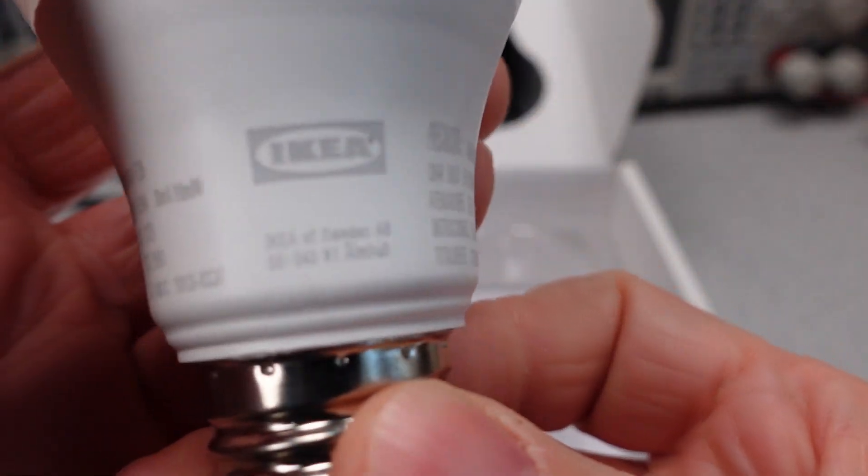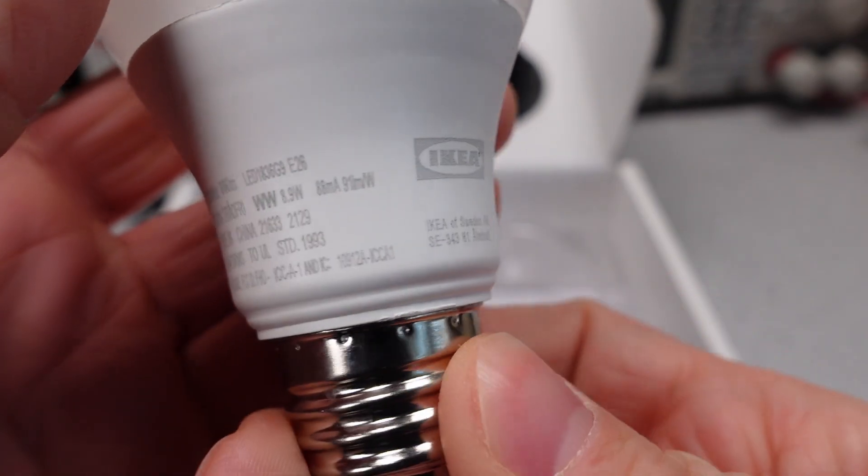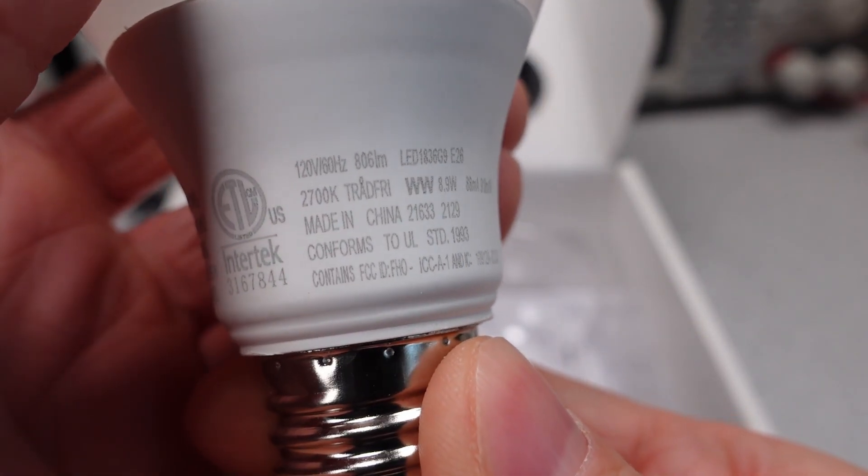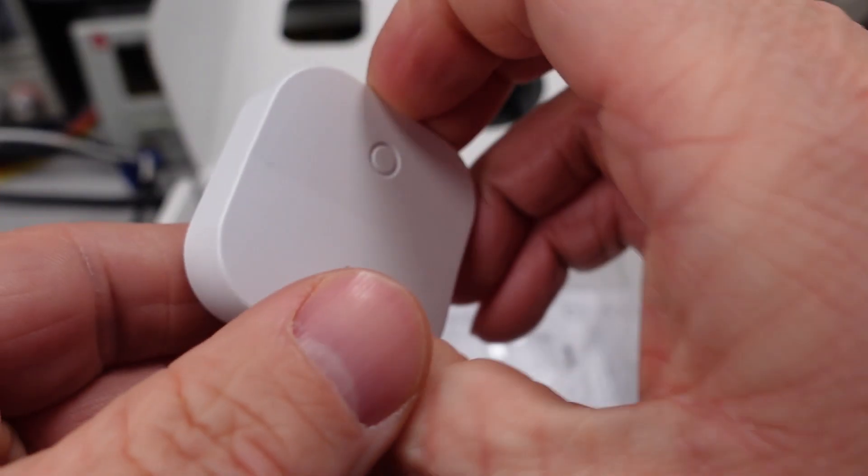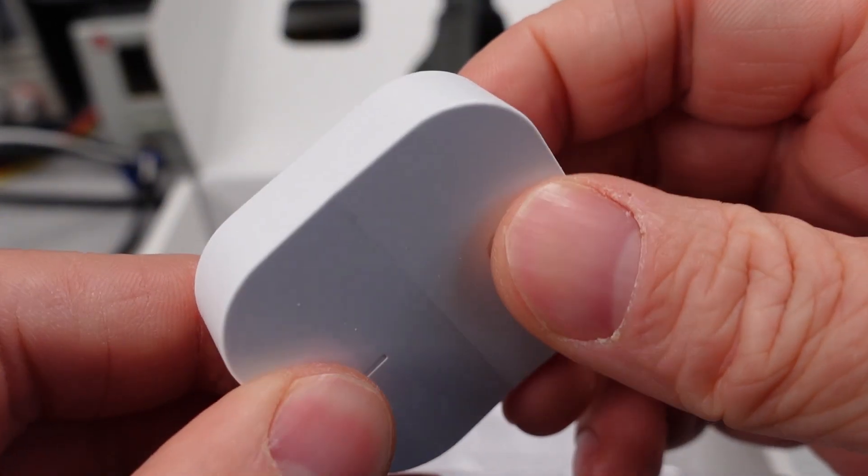I mean, not much to say here. It is, in fact, a light bulb. There are a lot of markings on the side and a fairly prominent safety listing. It comes with a small switch, a CR2032 battery, and a few mounting brackets.